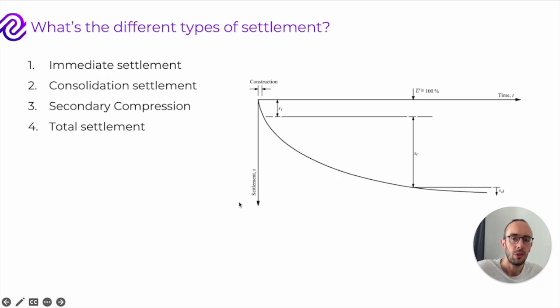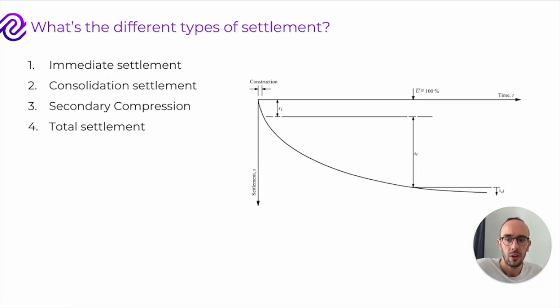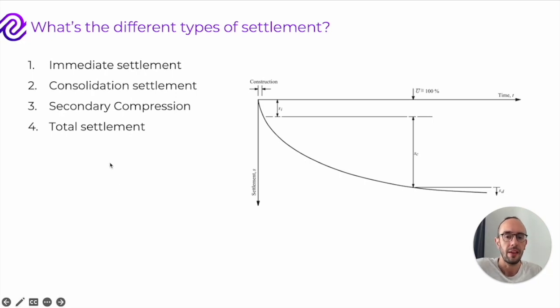What are the different types of settlement? There are basically three main types, and they all combine together to form total settlement.